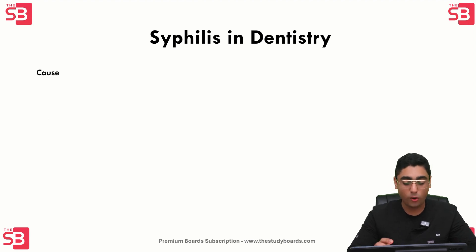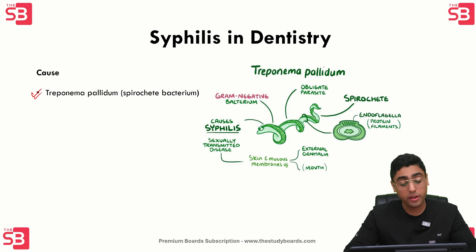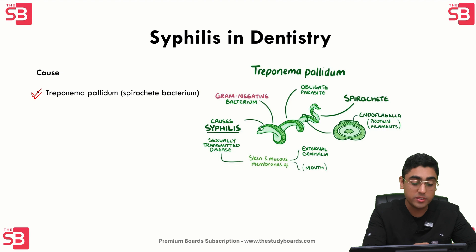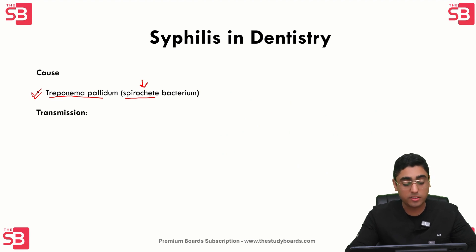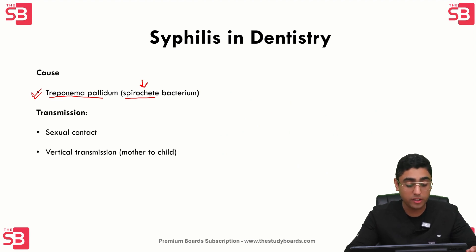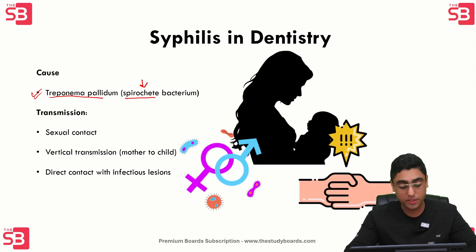Syphilis is caused by Treponema pallidum, and this is a straightforward question — they can ask you whether it's a spirochete bacterium or not. So you need to understand that it is a spirochete as well as that it is Treponema pallidum. Regarding transmission, it can be transmitted through sexual contact, vertical transmission (from mother to child), or direct contact with infectious lesions.